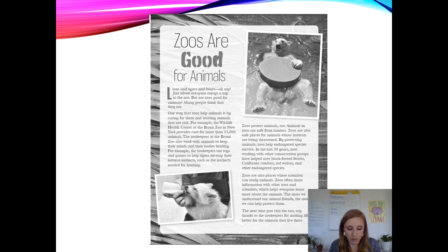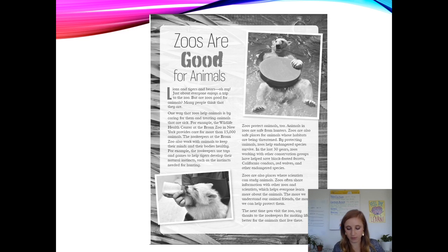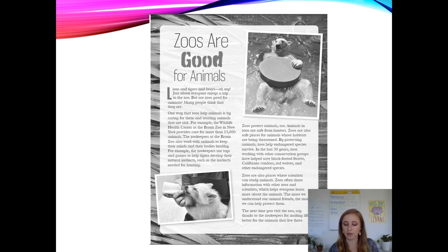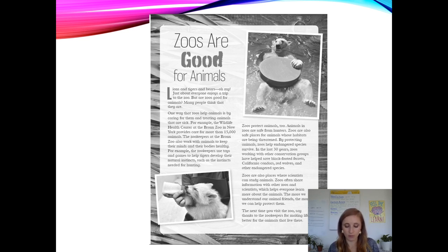Zookeepers use toys and games to help tigers develop their natural instincts, such as the instincts needed for hunting. Zoos protect animals too — animals in zoos are safe from hunters. Zoos are also safe places for animals whose habitats are being threatened. By protecting animals, zoos help endangered species survive. In the last 30 years, zoos working with other conservation groups have helped save black-footed ferrets, California condors, red wolves, and other endangered species. Zoos are also places where scientists can study animals and share information, which helps everyone learn about the animals.